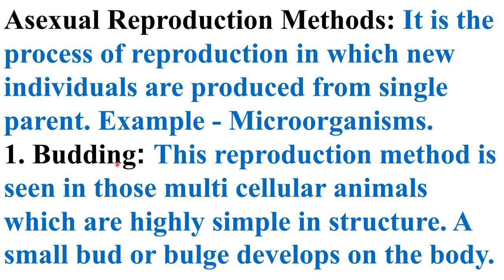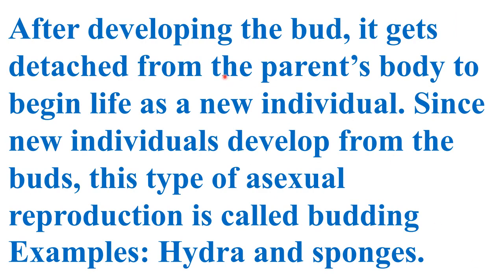Budding: this reproduction method is seen in multicellular animals which are highly simple in structure. A small bud develops on the body. After developing, the bud gets detached from the parent's body to begin life as a new individual. Since new individuals develop from the bud, this type of asexual reproduction is called budding. Examples are hydra and sponges.